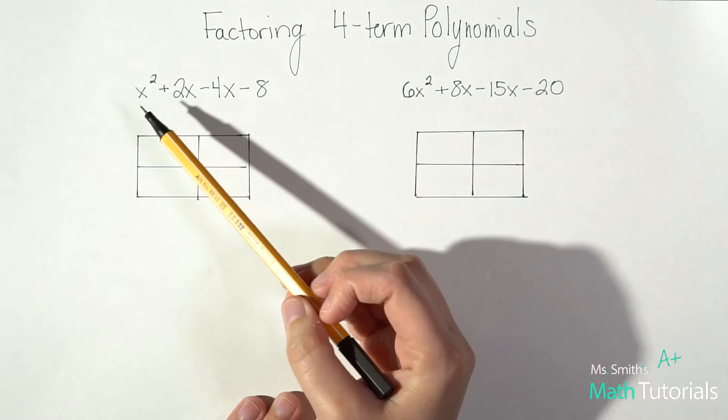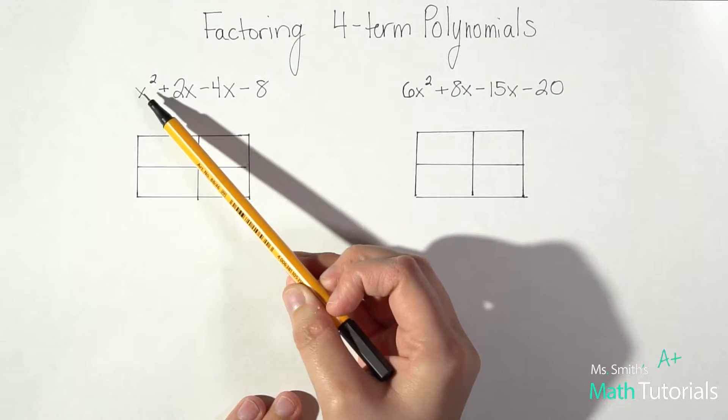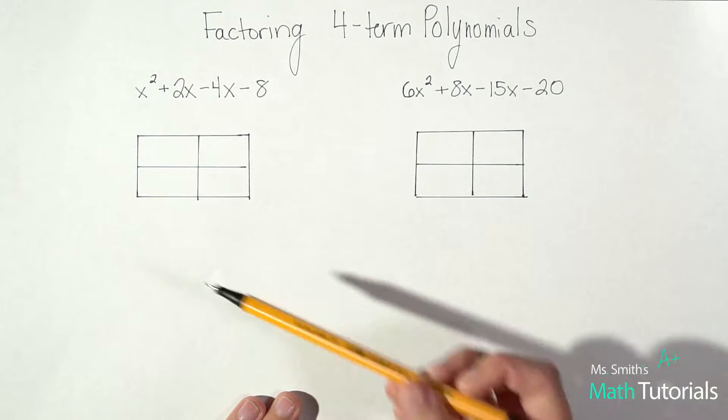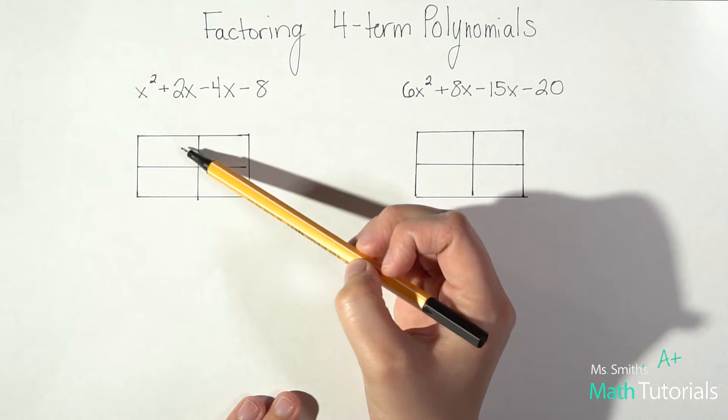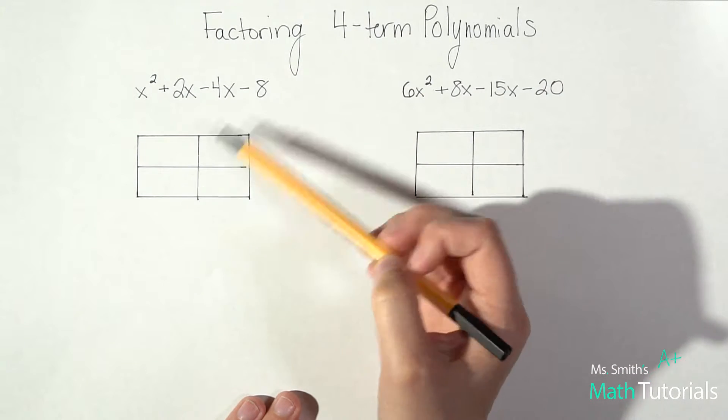So as you can see we've been given a four-term polynomial here: one, two, three, four terms. So we're going to take each term and put it into a box.